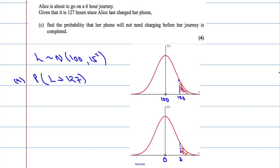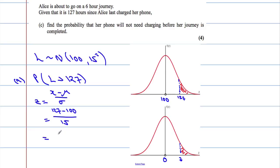To work out that z, we standardise the normal. Z equals x minus mu over sigma. x is the particular value, so it's 127; mu is the mean, so take away 100; over sigma, which is 15. That gives us 27 over 15, and when we type that into a calculator, we get 1.8.